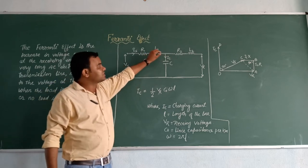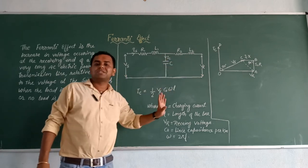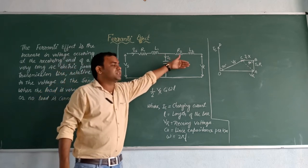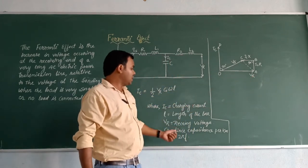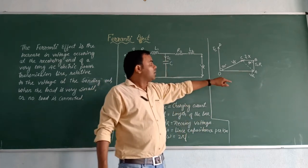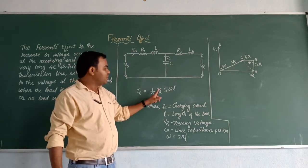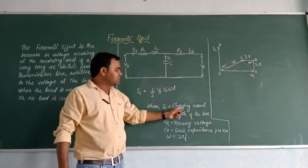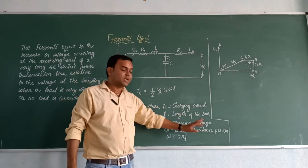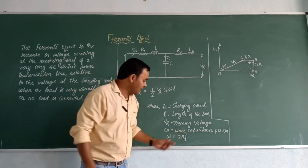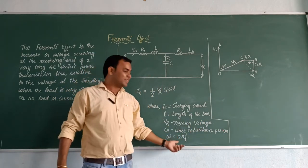The sending end voltage will increase and the capacitive property is uniformly distributed and the voltage is added. VR is the receiving end voltage and the IC current is the charging current. What is the value? IC = 1/2 * VR * C0 * omega * L, where IC is charging current, L is length of the line, VR is receiving voltage, C0 is line capacitance per km, and omega is the frequency.